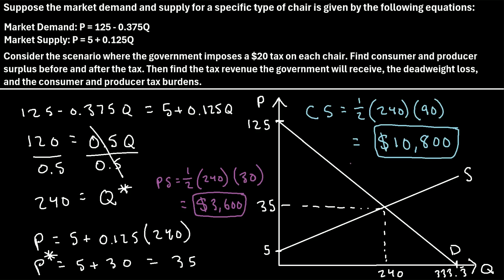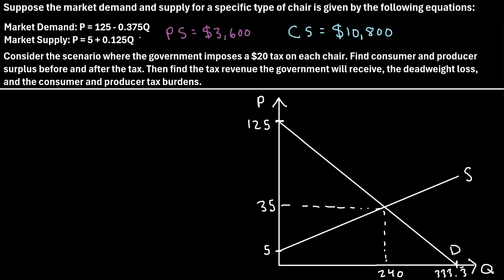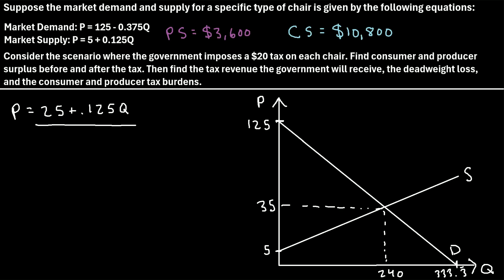Now let's find these same values after the tax has been implemented. When the government imposes this $20 tax, it's directly going to affect the market supply equation. The price is going to be increased by $20, so we just add 20 to the equation. The new market supply is P is equal to 5 plus 20 — which is 25 — plus 0.125Q. So this is the new market supply equation after the tax.